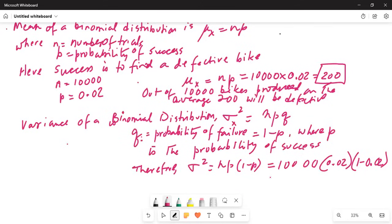We already know σ squared, 10,000 times 0.02 is 200 times 1 minus 0.02 is 0.98. So that will be equal to 200 times 0.98 or 196.